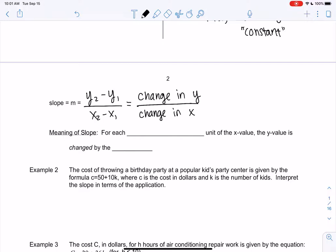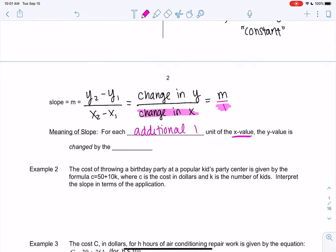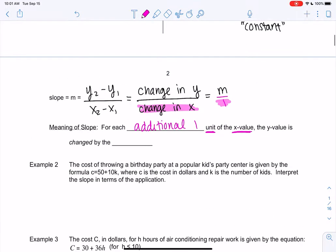And then this was equal to the slope, which I am going to rewrite m as m over 1. Any number we can write over 1, and this will help us interpret it. So we'll notice that the x's are changing by 1's. Change in x is 1. So for each additional one unit of the x value, I will change that to whatever my variable is and I'll also change unit to match what my variable is. Then the y value is changed by m, and then change will be increasing or decreasing, which we'll decide as we do examples by the slope.